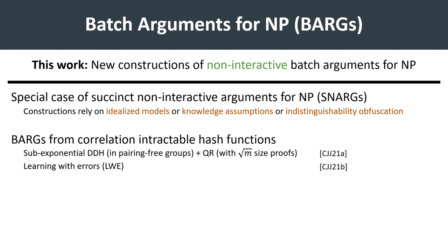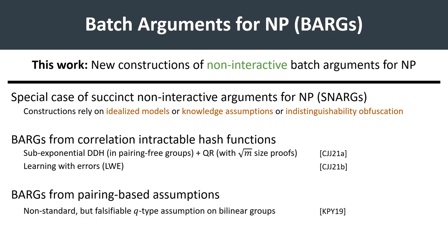If we consider the relaxation to batch arguments, a pair of recent works by Shodori, Jain, and Jin have shown how to realize them from either the sub-exponential DDH assumption together with QR, or from the plain learning with errors assumption. Both constructions leverage correlation-intractable hash functions to provably instantiate the Fiat-Shamir heuristic. Additionally, Kalai, Paneth, and Yang showed how to construct a batch argument using non-standard Q-type assumptions on groups with bilinear maps.